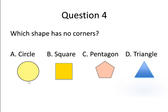Question number 4. Which shape has no corners? Option A, circle. Option B, square. Option C, pentagon. Option D, triangle.